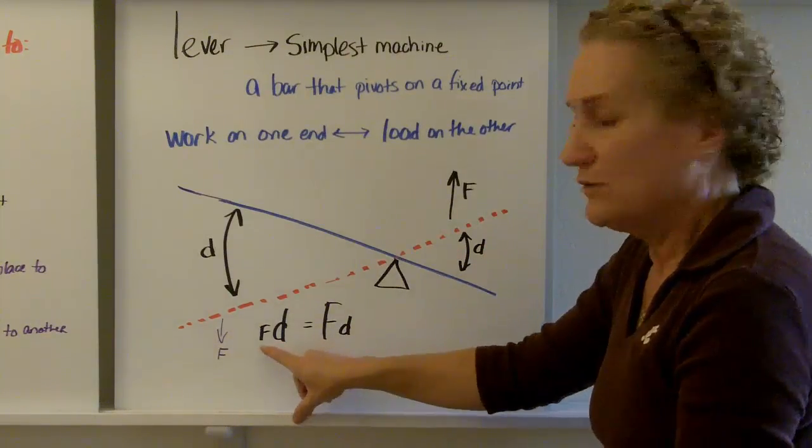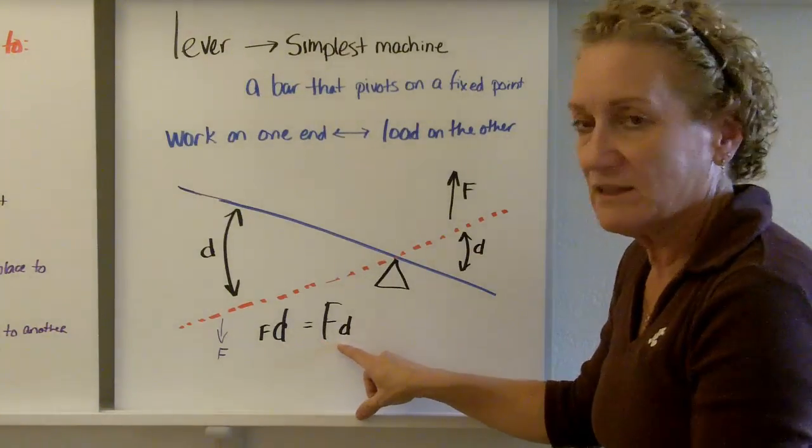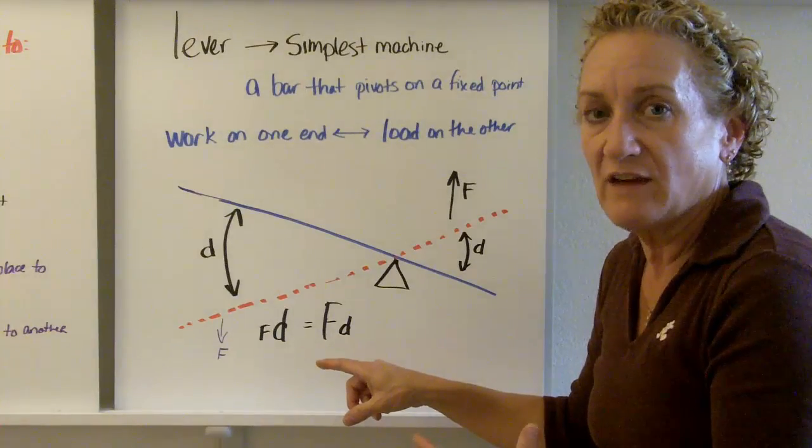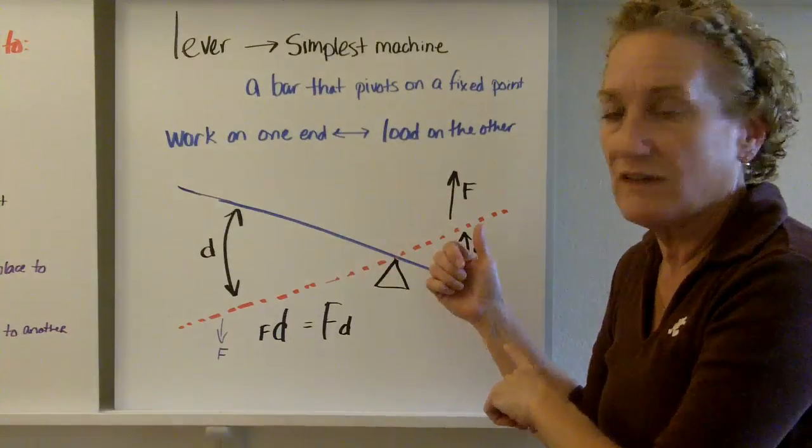And what happens on this side is it moves a little distance, but you have a big force. So, little force times big distance equals big force times little distance, and that's the advantage of a lever. You can use a little bit of force on this side and have a huge difference on this side.